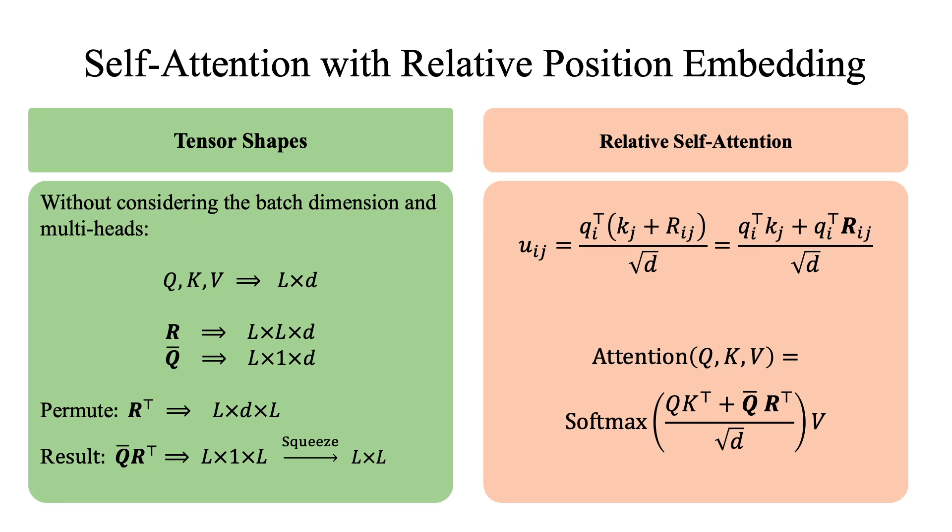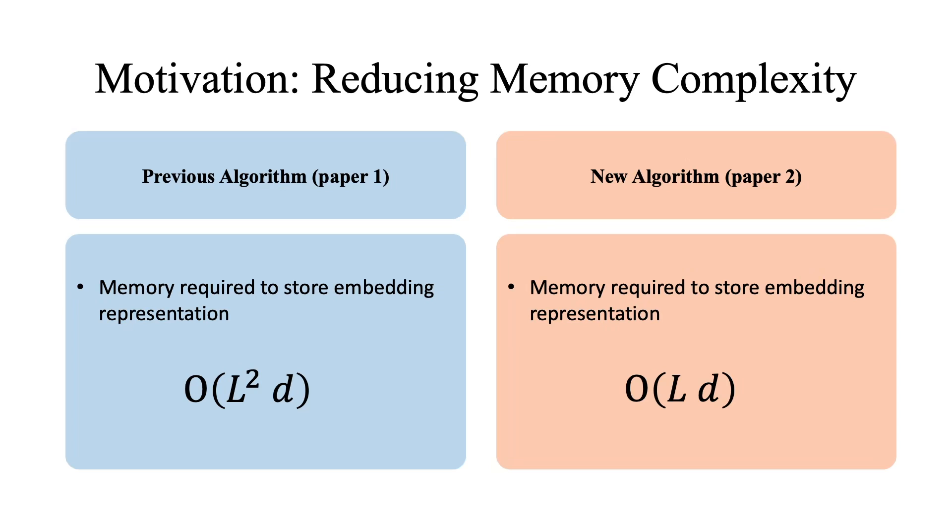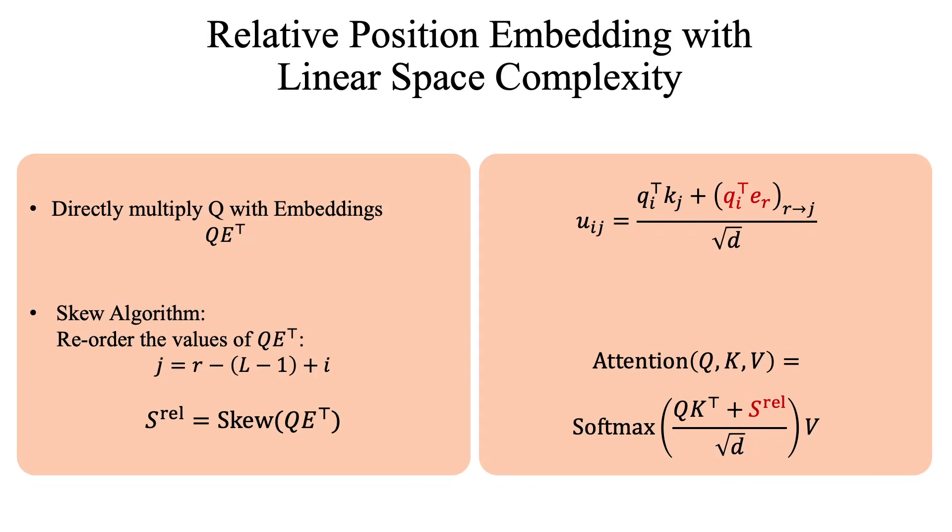Our second approach is from this paper Music Transformer, which tries to reduce the memory complexity of relative self-attention. So let's see how it works. As we saw in the previous approach, instantiating the three-dimensional tensor R is memory intensive because its memory complexity is big O of L squared d. This new algorithm, however, computes the relative attention scores without instantiating tensor R, and thereby the memory complexity is reduced to linear with respect to L. In this approach, rather than instantiating the embedding tensor R for all pairwise positions, they propose an algorithm where the relative attention scores are computed in two steps.